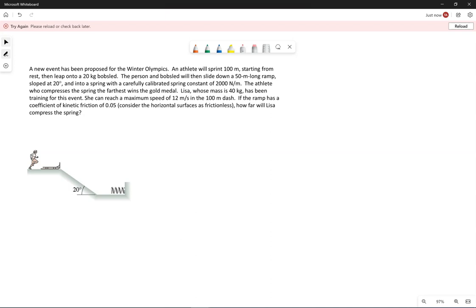All right, so our contestant, our athlete Lisa, has a mass of 40 kilograms. We know the length of this ramp is 50 meters long. The angle's 20 degrees. That's already in the picture. They're sprinting 100 meters. The bobsled, I'm going to just call it sled, is 20 kilograms.